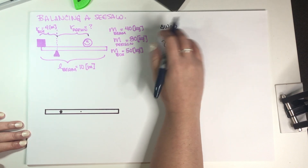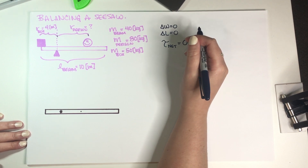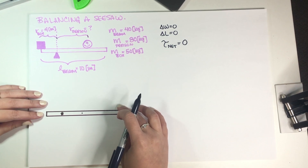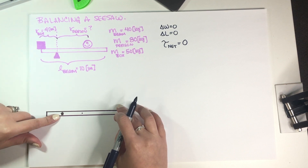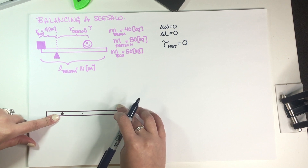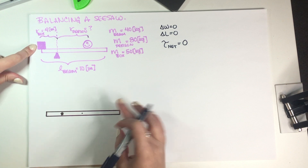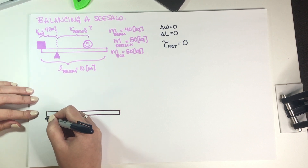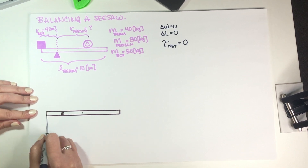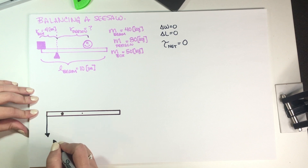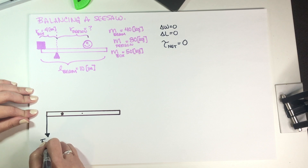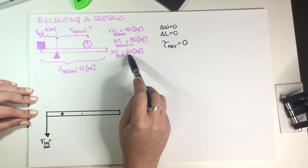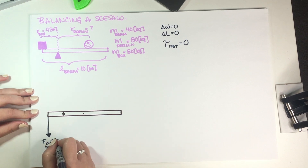To balance the torques, we need to identify how many torques we have. This is the extended force diagram we'll work with — the pivot point is right here. We have this box, which has a weight of 50 kilograms, and it exerts a force on the beam. I'll call this force-by-box, which equals mass times gravity — using g = 10, that gives us 500 newtons.